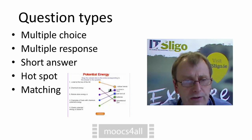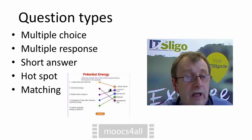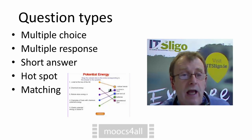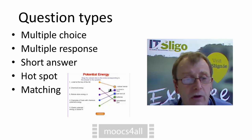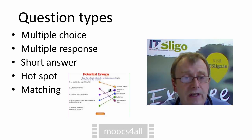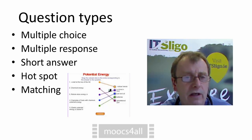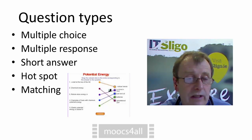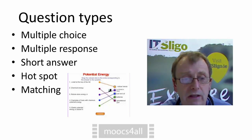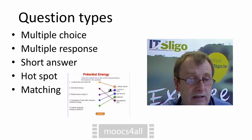There's also short answer questions, where a learner can input a word or a short phrase and the computer will be able to determine if that's correct. There's also what's called hotspot questions, where it shows an image and there are various areas on the image that if they click on, they will get a correct grade for it. There's also matching pairs, where there might be two lists of items and you have to match the items in the list.